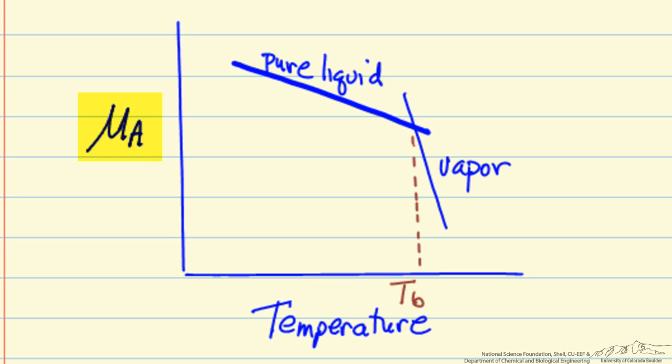If we look at a plot of chemical potential versus temperature, first for a pure liquid (the heavier line) and then for a vapor, at the point where the chemical potentials are equal, this is the boiling point for this pure liquid.